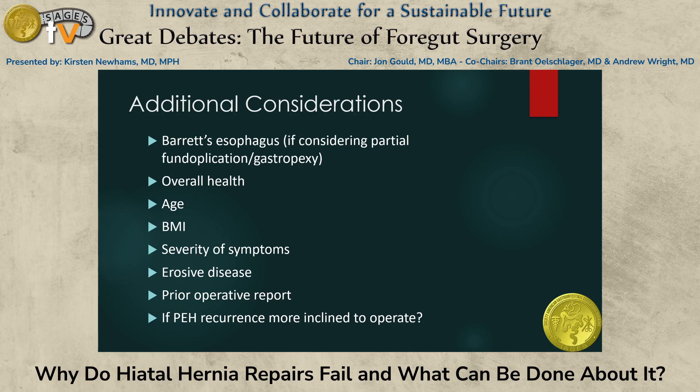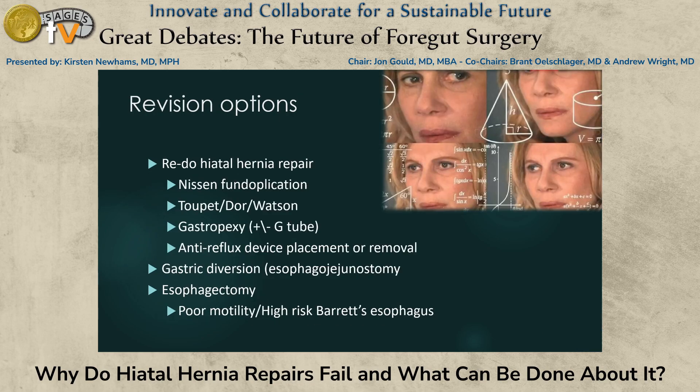When developing a plan for next steps, it's important to consider the patient's age, comorbid health conditions, BMI, symptom severity, as well as findings of Barrett's esophagus and erosive disease. With morbidity ranging from 15 to 40 percent and mortality from zero to two percent surrounding these surgeries, this is notable. If you've decided to operate, the aforementioned testing and patient factors should guide your approach — including type of fundoplication, anti-reflux device placement or removal, myotomy, gastric diversion with esophagogastrostomy, or esophagectomy — depending on the physiologic findings and clinical picture.